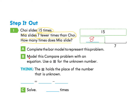Now Part B — model this compare problem with an equation, using a square for the unknown number. The unknown is how many times Mia slides. Choi slides 15 times, so we write that, then take away 7 to find the unknown. Solving: 15 take away 7 equals 8. Mia slides 8 times.